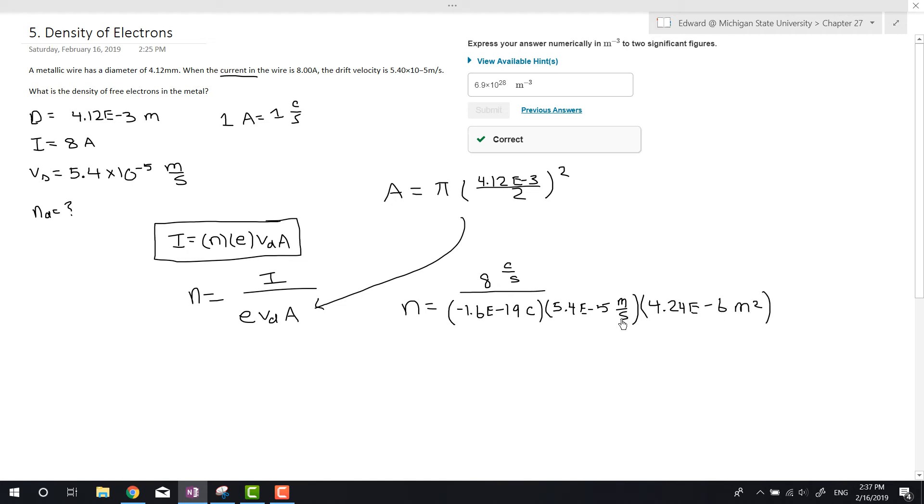As you guys can see, if we multiply the top and the bottom by seconds, these seconds will cancel out. The coulombs and this coulomb will cancel. So all we're left with is meters cubed in the denominator. The charge of an electron, we're going to forget about this negative sign here, because the charge density, or not the charge density, the density of electrons is going to be positive. You're not going to have a negative density.